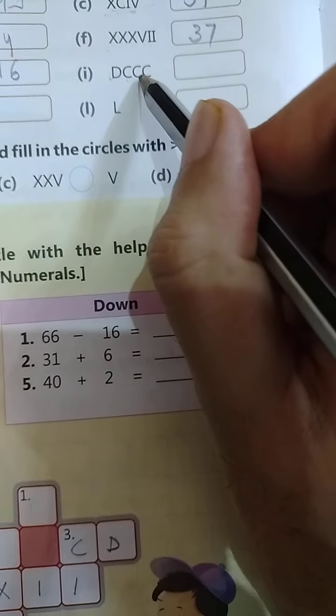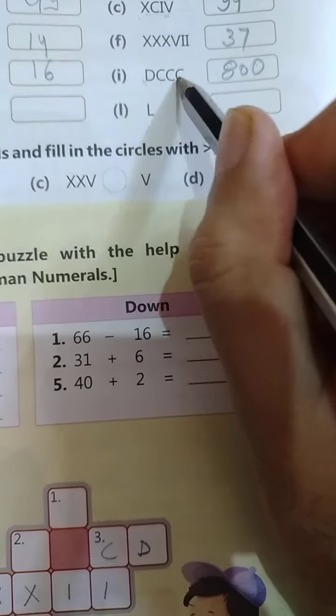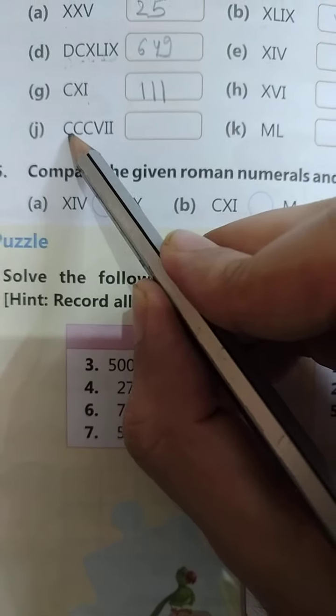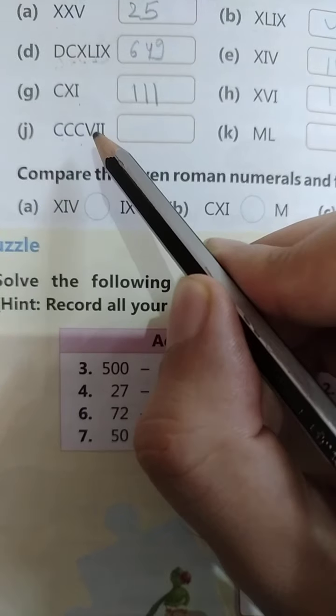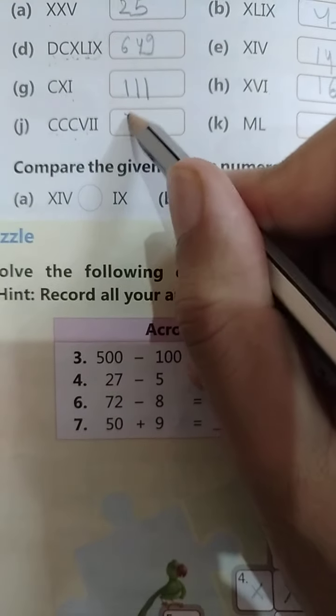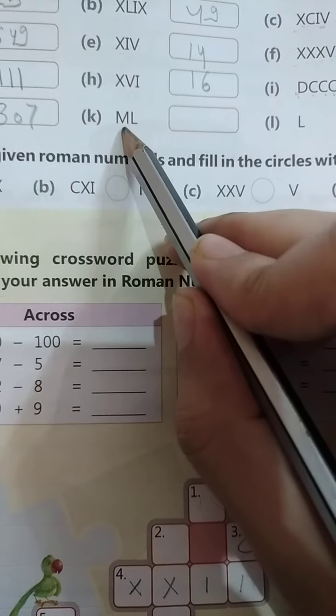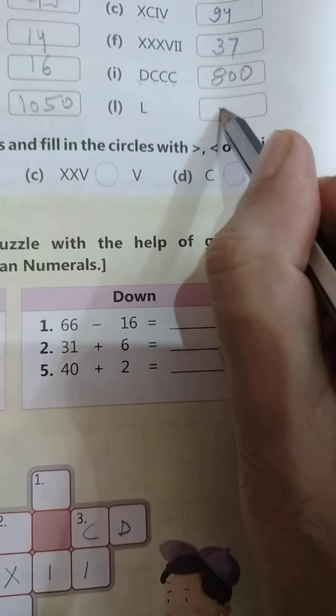Next, 500, 600, 700, 800. CCC, 100, 300, 305, 306, 307. And what is this? 1000 plus 50, 1000, 1050. Next, what is this? 50.